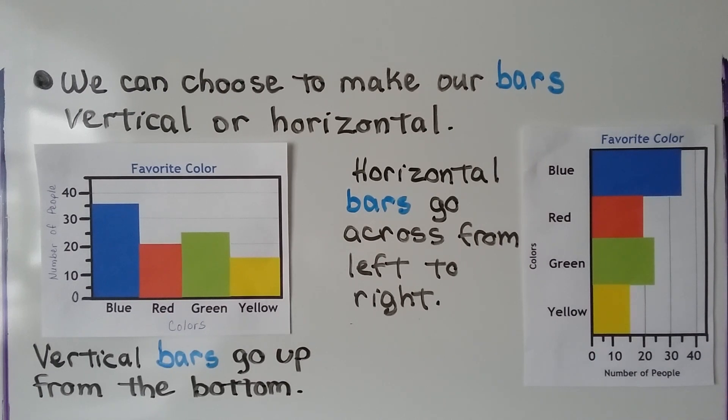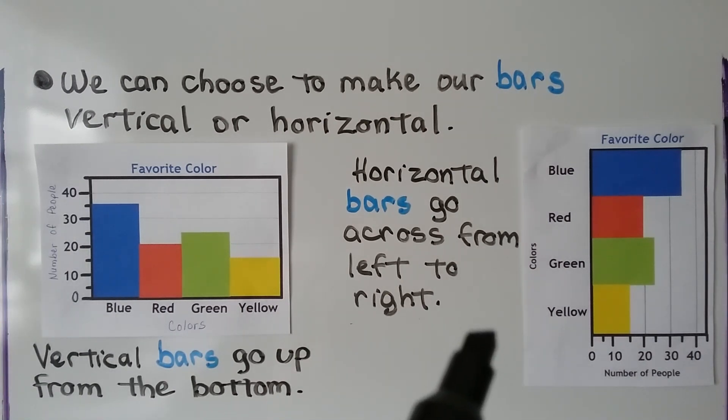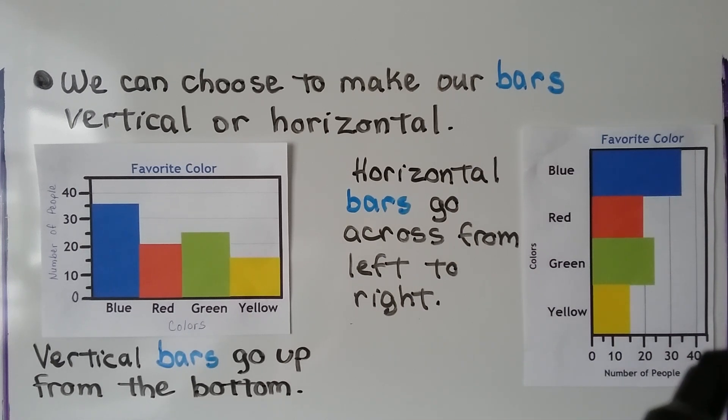We can choose to make our bars vertical or horizontal. Vertical bars go up from the bottom. Horizontal bars go across from left to right.